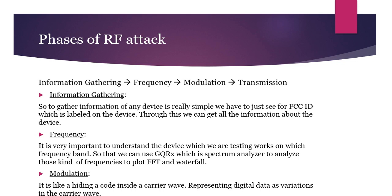Let's see the phases of RF attack. We are all familiar with the OSI model, and RF attacks happen on the physical layer of the OSI model. The four phases of the RF attack are: information gathering, frequency analysis, modulation, and transmission. In information gathering, we can gather information about a device through its FCC ID which is labeled on the device. Through this we can get all the information of the device. Then we have to identify the frequency — it is very important to understand which frequency band the device under test operates on, so that we can use GQRX, which is a spectrum analyzer, to analyze those frequencies and plot an FFT waterfall, through which we can get the frequency band of the device.